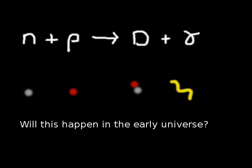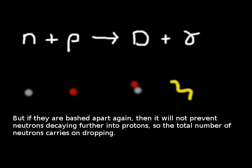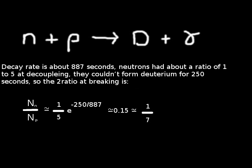This is because the binding energy for deuterium is 2.2 MeV. It won't drop to well below this temperature until 250 seconds after the Big Bang. Once all of the neutrons are caught inside of deuterium atoms, they will stop decaying. But all of this time that they have been decaying, the ratio has been upset, leaving it at about 7 protons to each neutron.